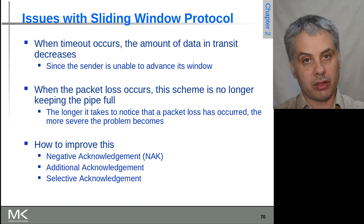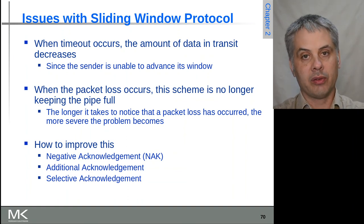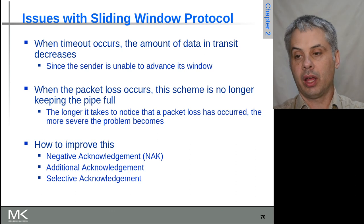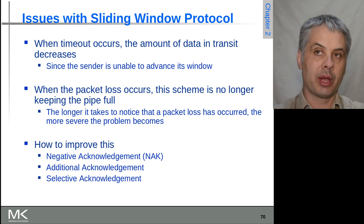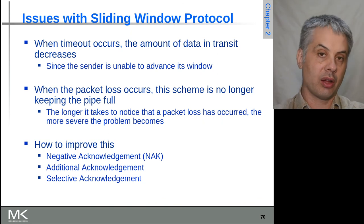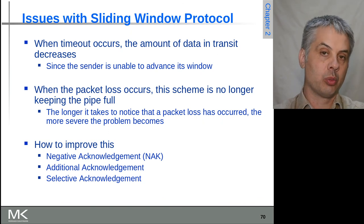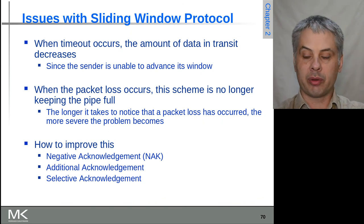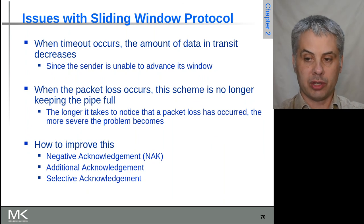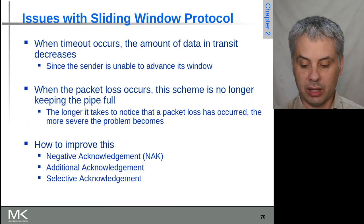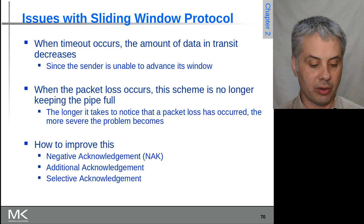There are a number of ways to address these issues. We can use a negative acknowledgement, where we explicitly signal that a frame hasn't been received, or we can use selective acknowledgement. These approaches will be discussed in the next video.